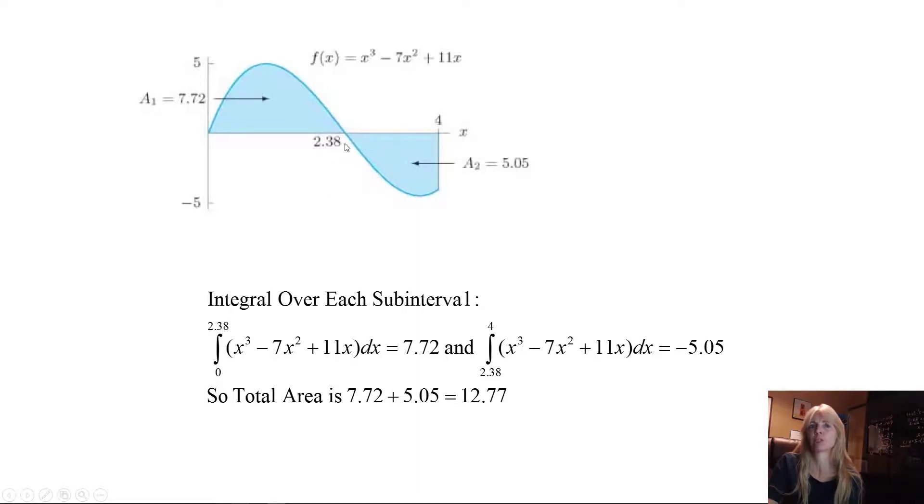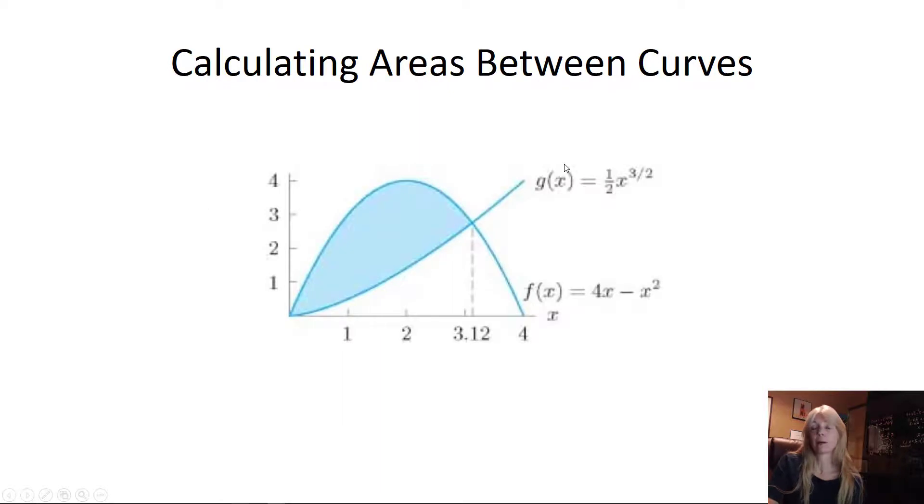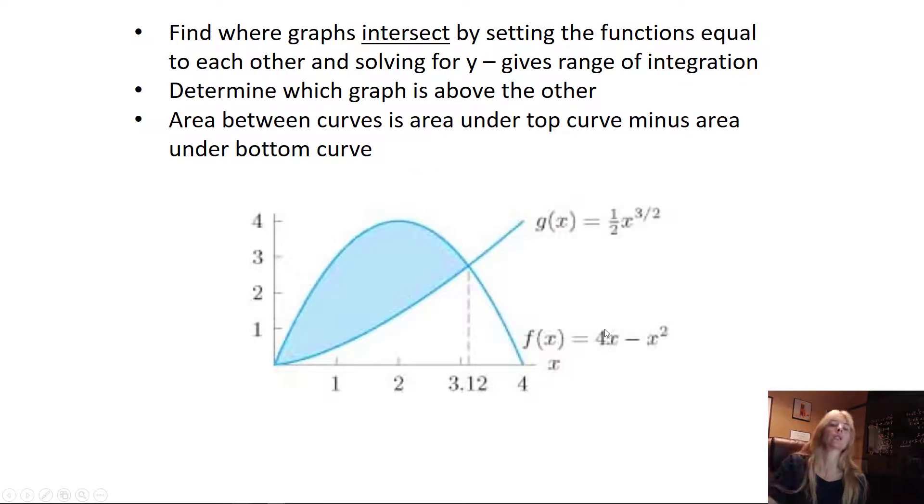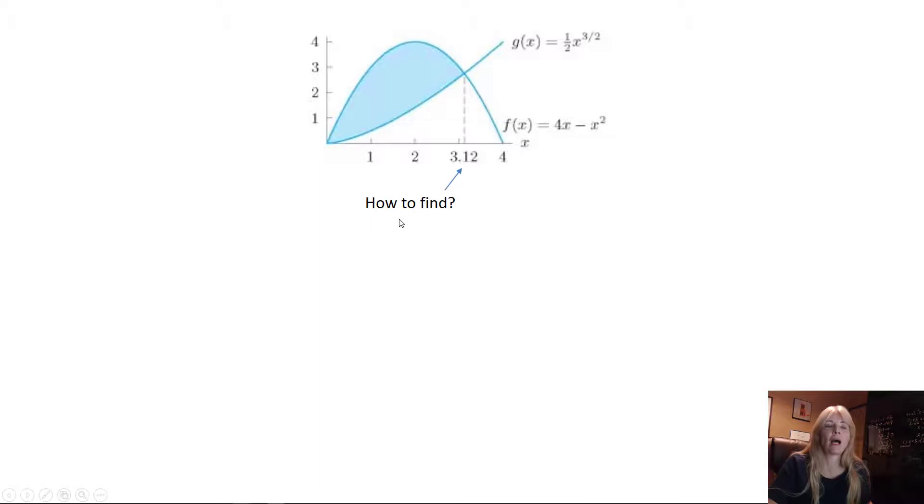How can you calculate area between curves? Notice we have this as my 4x - x², I have the lower here. So what we're doing is we look to find where the two graphs intersect, and how do you do that? You set the functions equal to each other, okay, and then you solve for your variable—in this case, x—and determine which graph. You have to know which graph is above the other one because that you'll put in first. And so the area between the curves is the area of the top minus the area of the bottom.